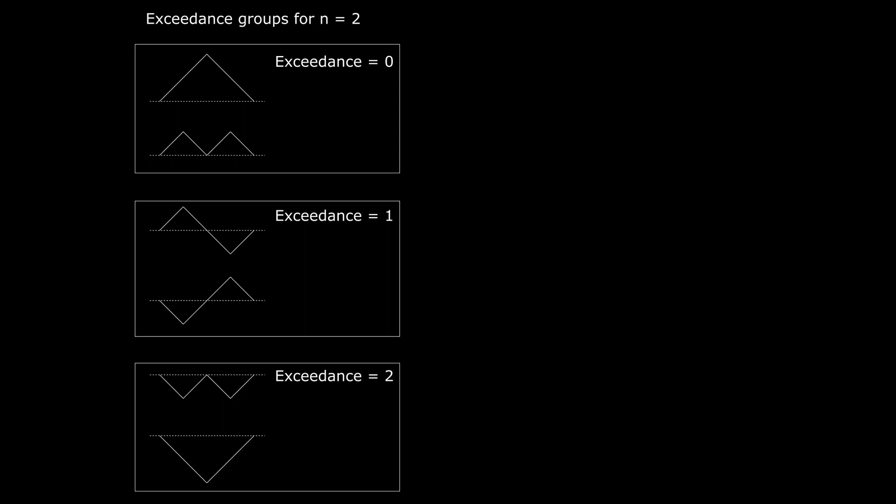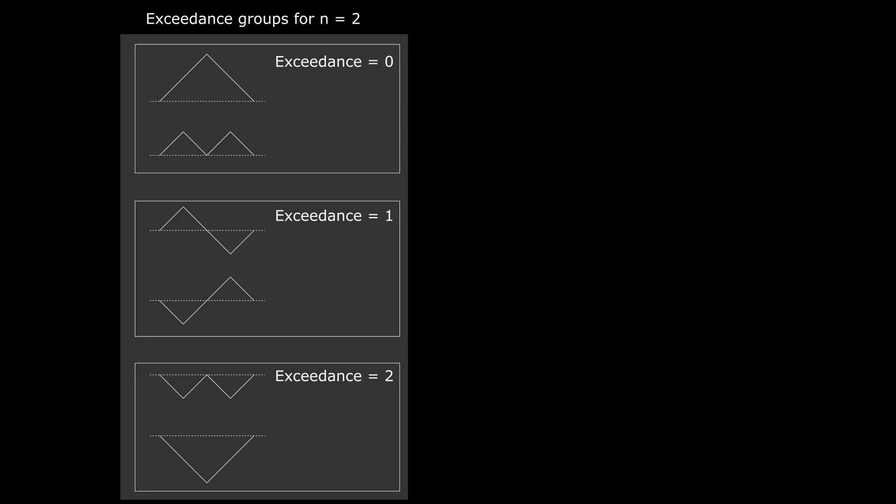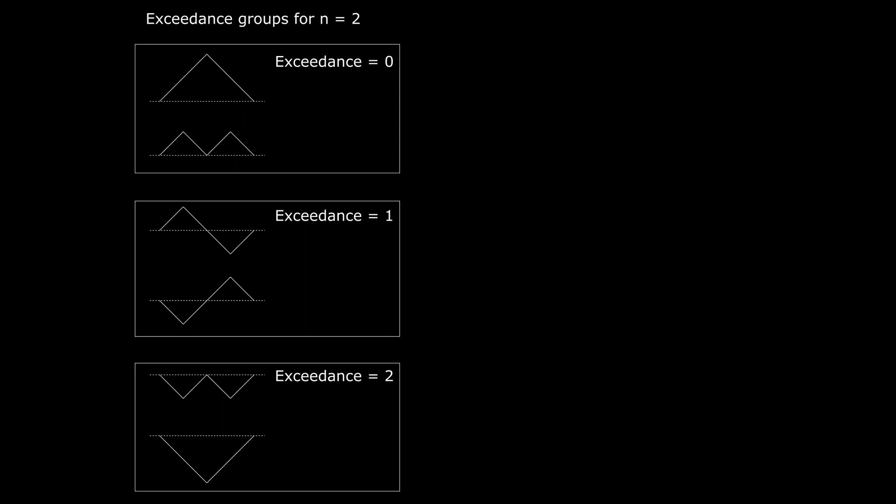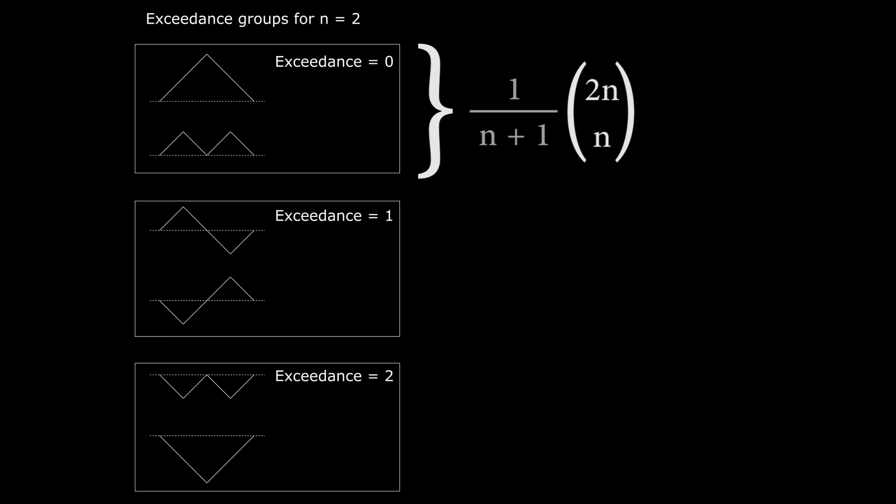Then, if we partition the set of paths of length 2n into groups by their exceedance level, each group will be the same size. The maximum exceedance will be n, since there are n down steps, and so there will be n plus 1 exceedance groups, since we are including the group of zero exceedance. And in fact, it's the group with zero exceedance that we're interested in, since these are the paths which don't go below the y equals zero line. All of the groups together constitute the 2n choose n paths possible, but we are only interested in the group with zero exceedance. So, we'll just divide by the total number of groups to get 1 over n plus 1 times 2n choose n. And this is the combinatoric equation for the Catalan numbers.